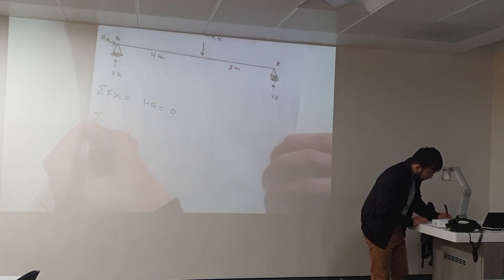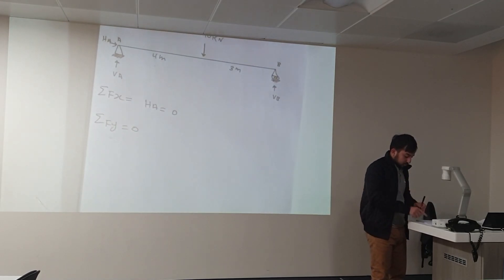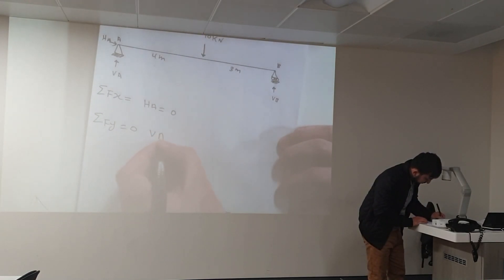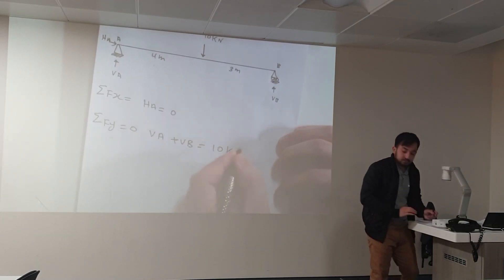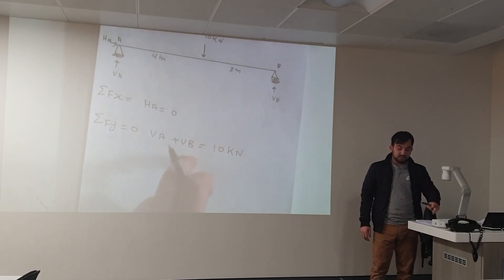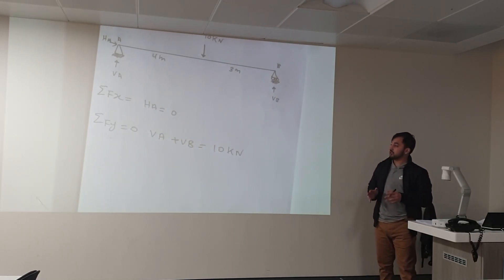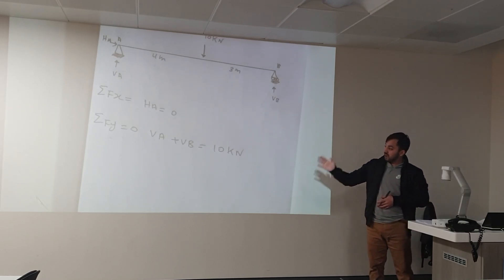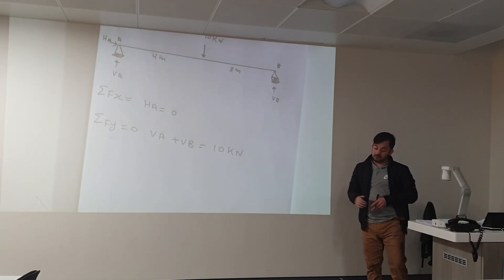Now second step, we have to take summation of forces in the y-axis. Sum of Fy equals zero. So we have the force acting in the direction of the y-axis. So we have VA plus VB is equal to 10 kilonewtons. So now we know VA plus VB equals 10 kilonewtons.